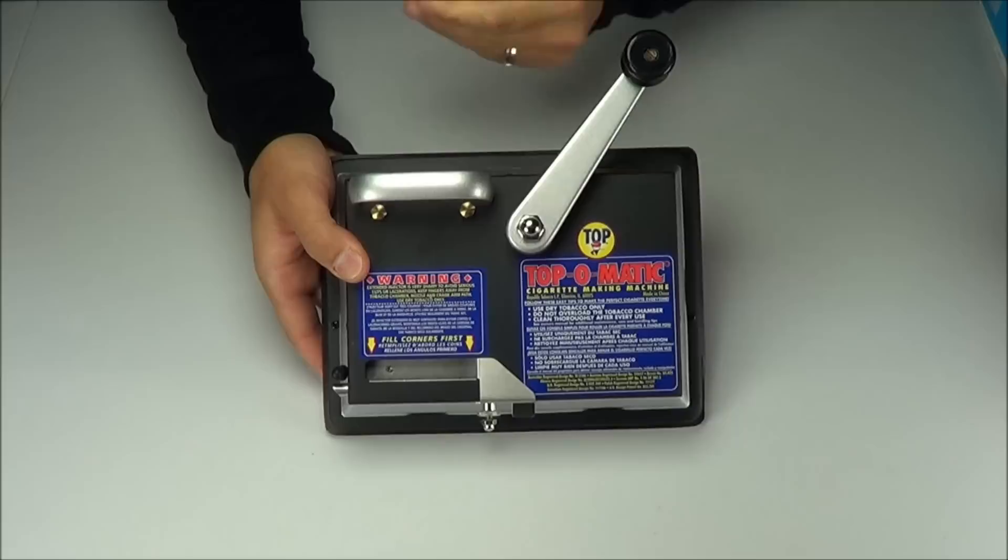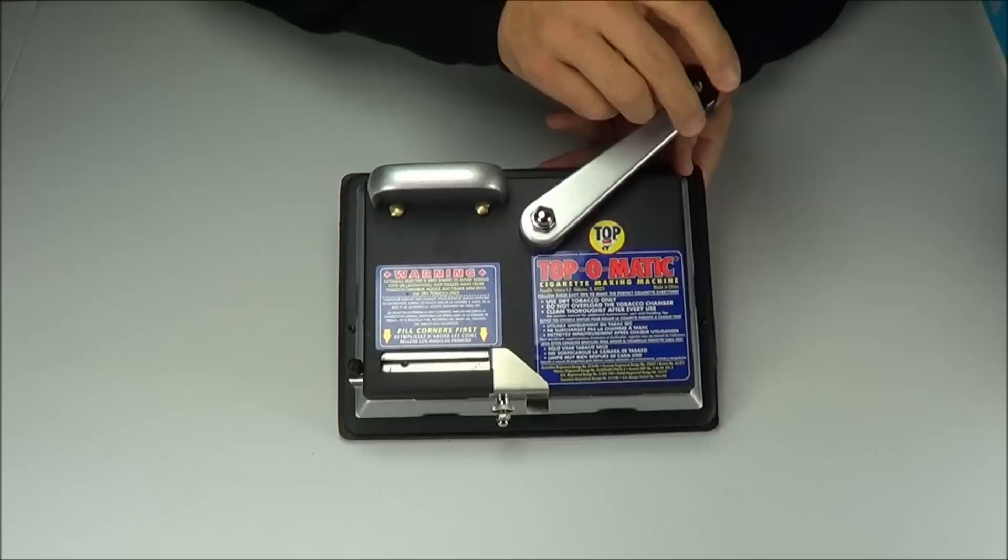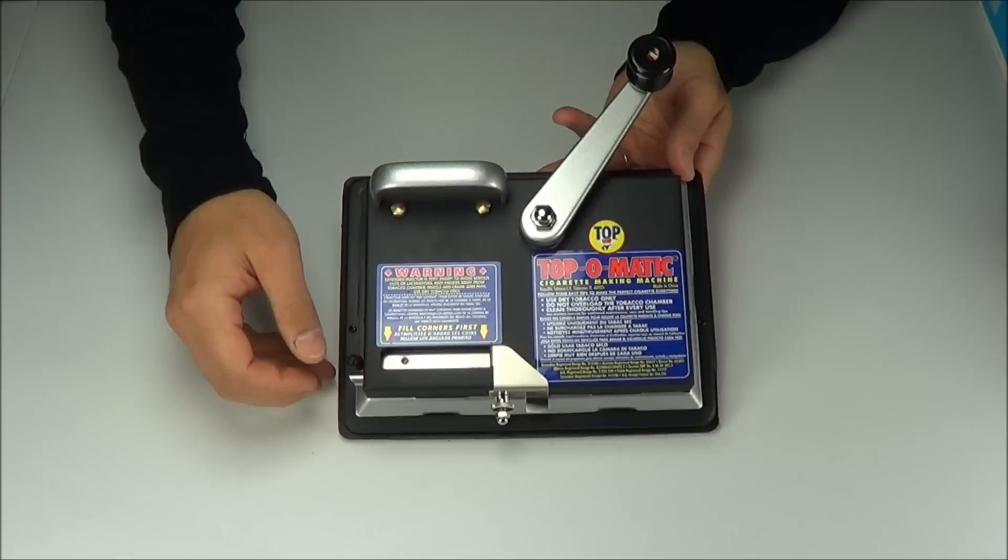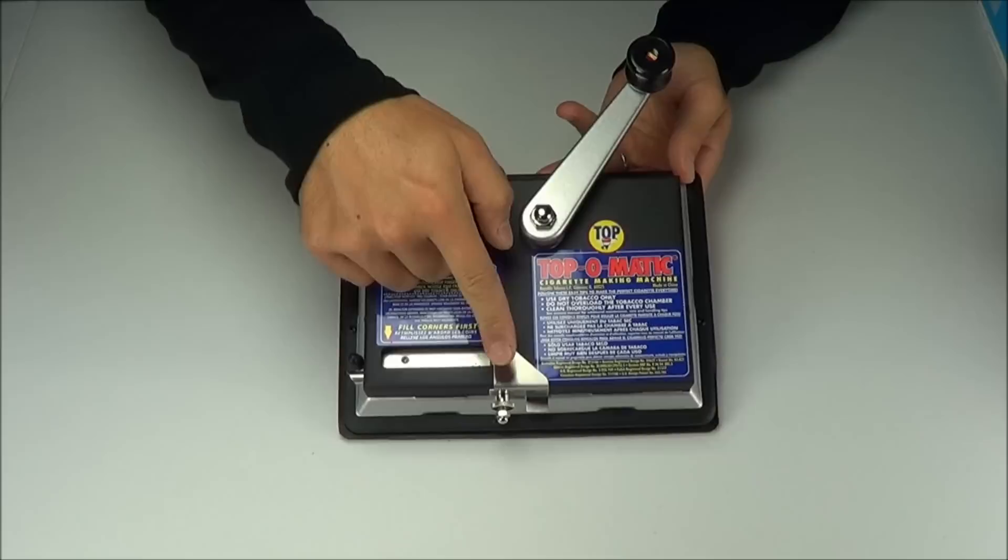This is a tabletop version and what we have here is the swing lever that will engage the machine. This is the chamber where you fill the tobacco up with. This will hold a cigarette tube on.